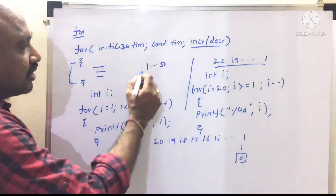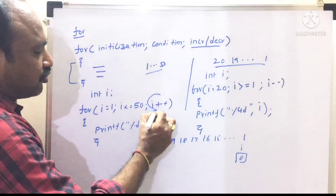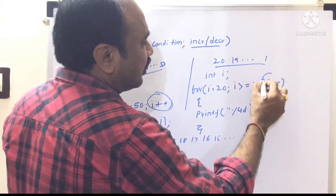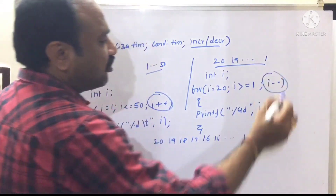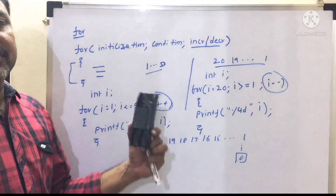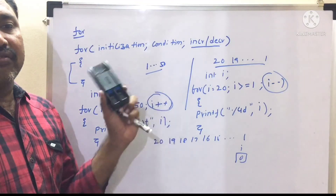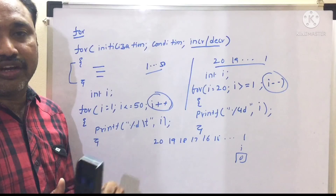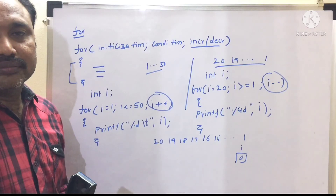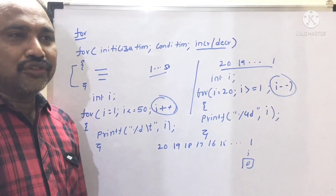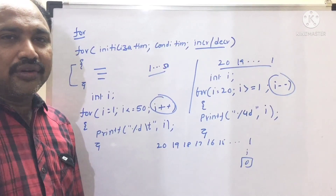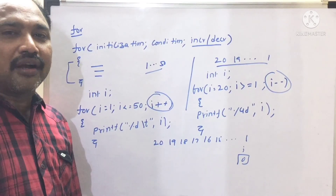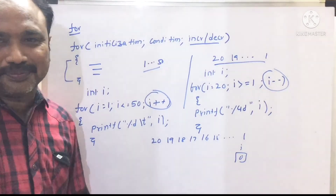In the 1-to-50 case the series is increasing so we use increment; in the 20-to-1 case the series is decreasing so we use decrement. This covers while, do-while, and for loop statements. Go through this video, like, share, comment and subscribe. Thank you.